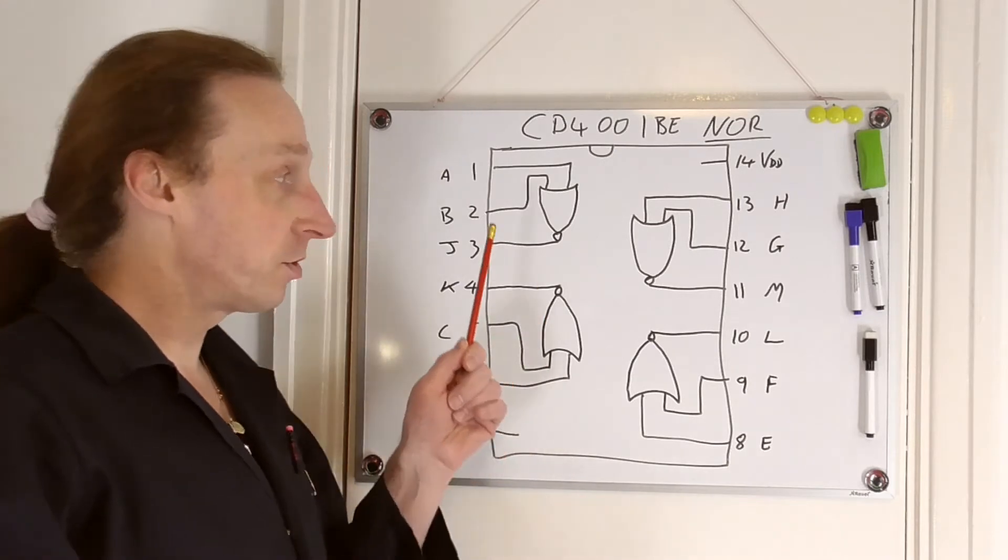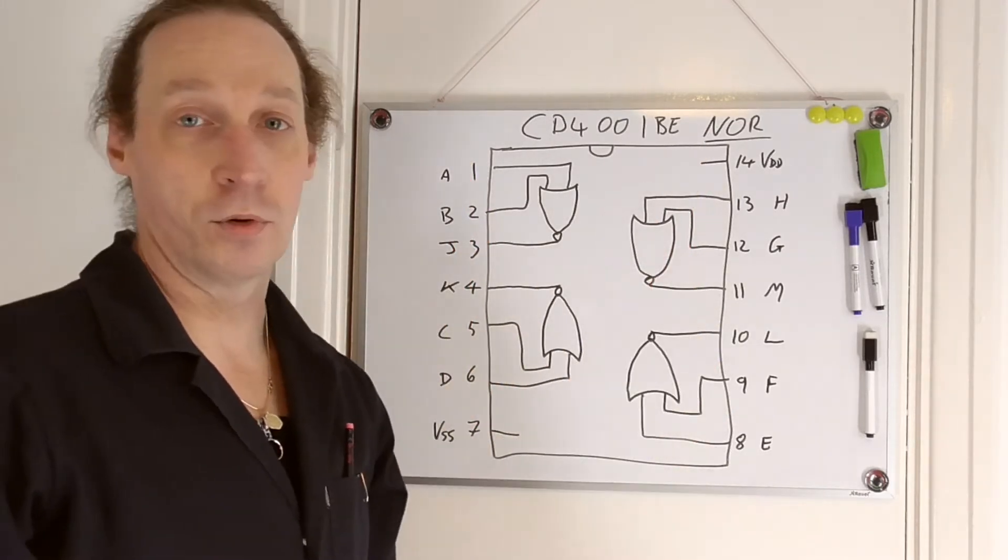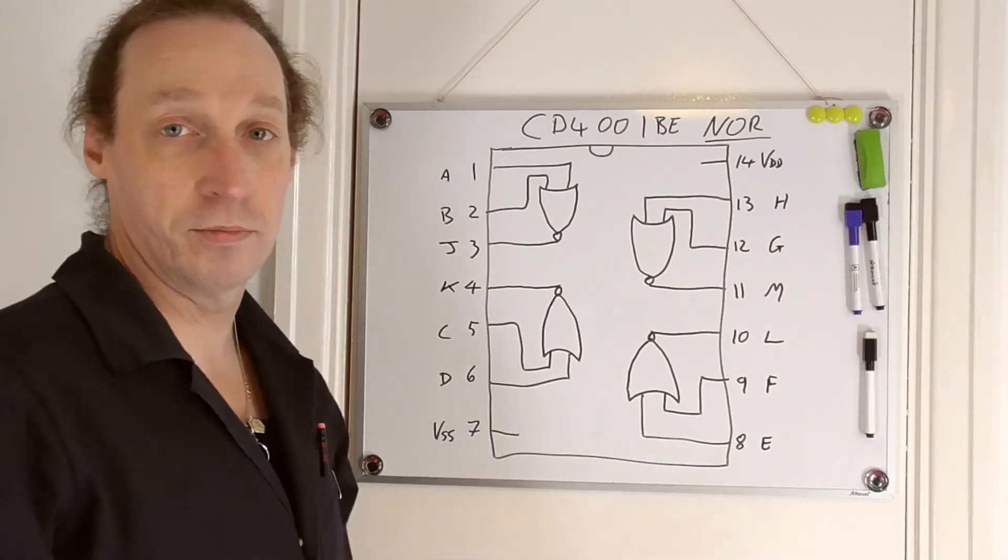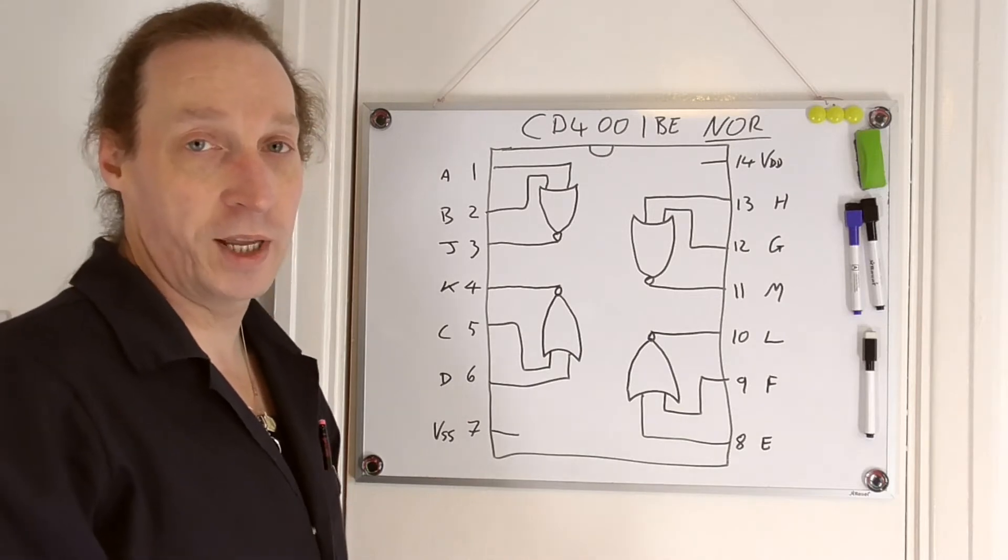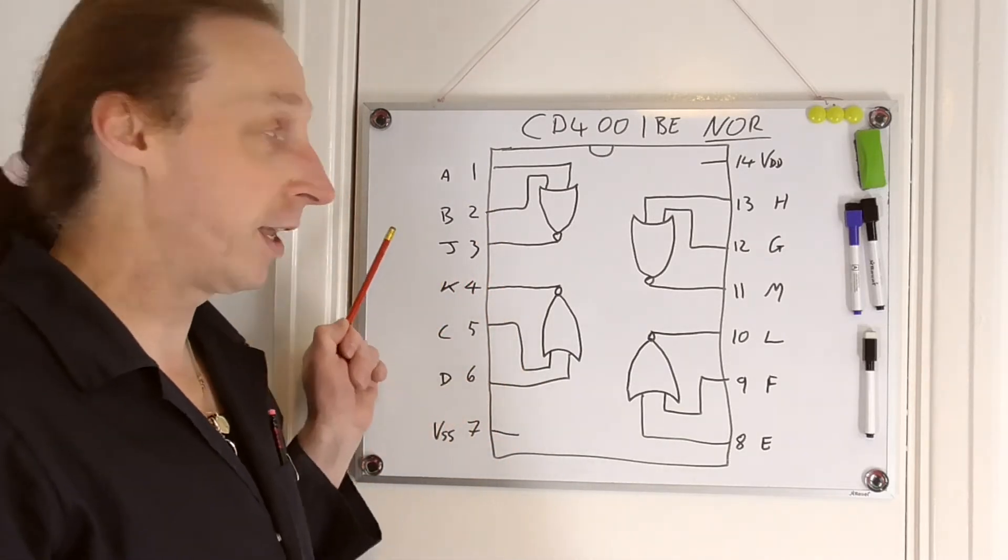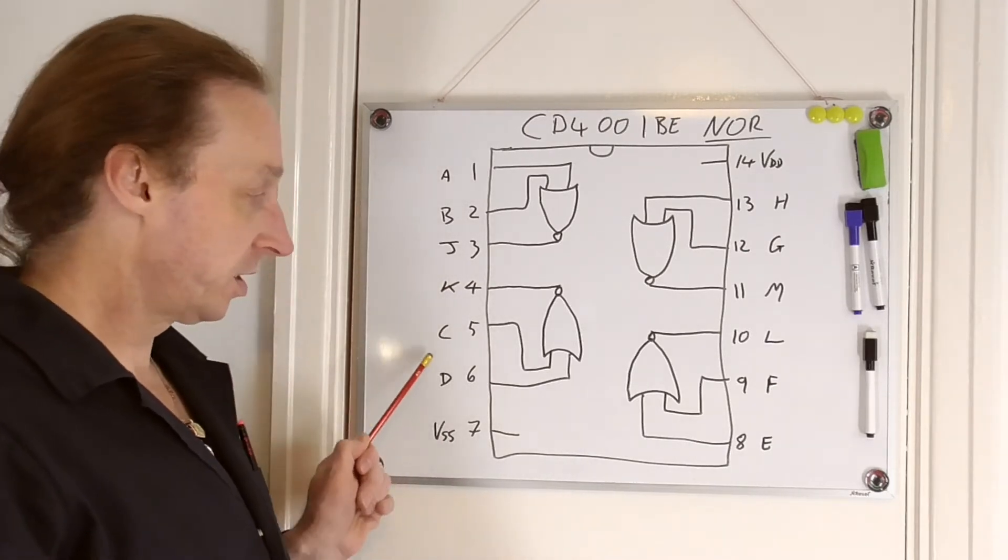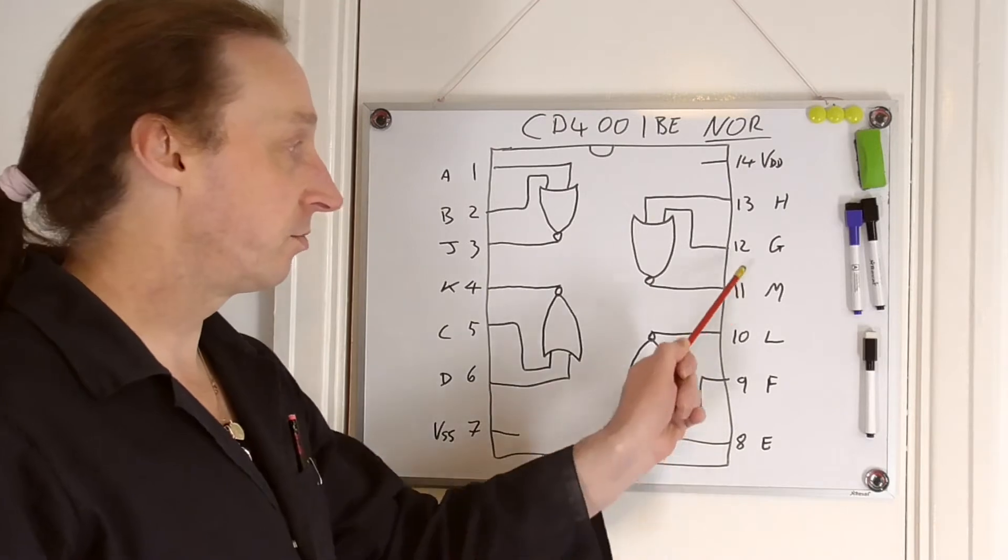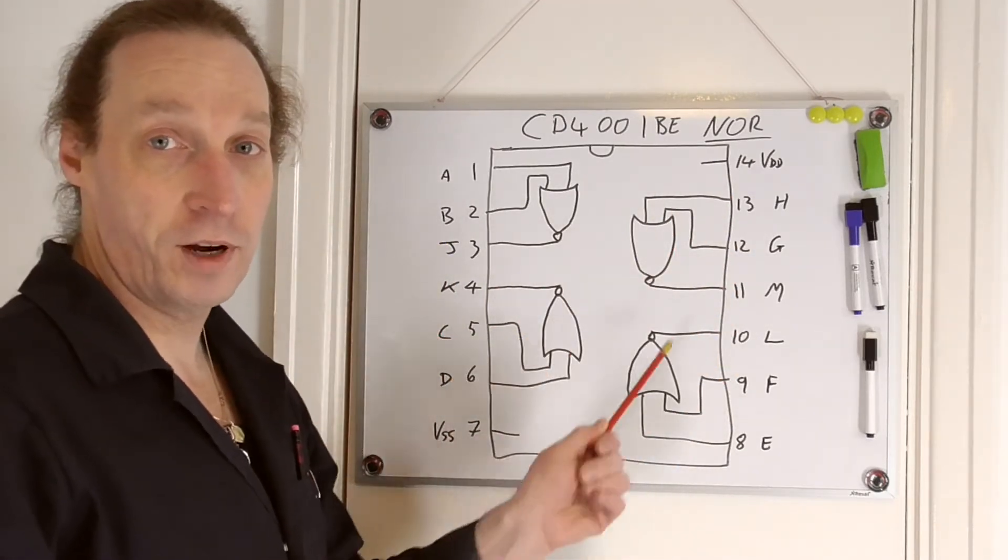Labeling convention, obviously 14 pin, pin 14 supply, pin 7 your ground or VSS. So simple basic there and the gates are numbered in the normal sort of way. Inputs start with A, B, C, D, E, F, G, H and then the outputs J, K, L and M. So very very simple.